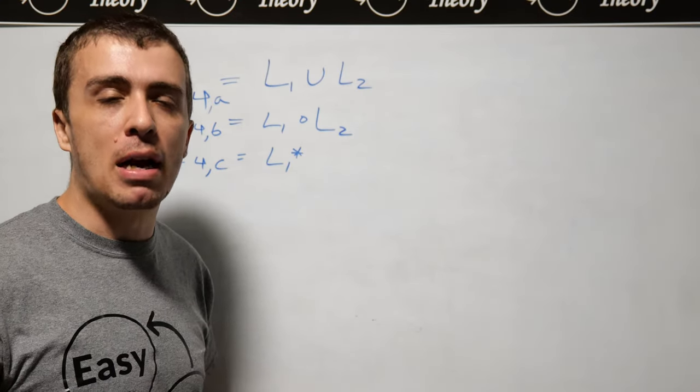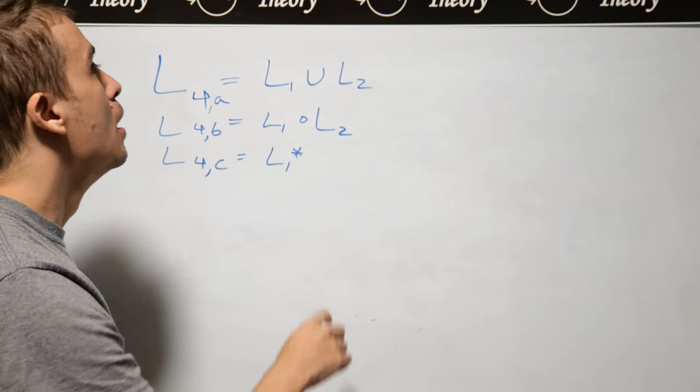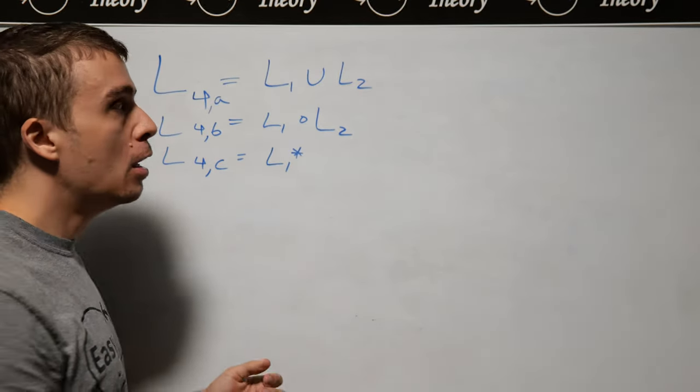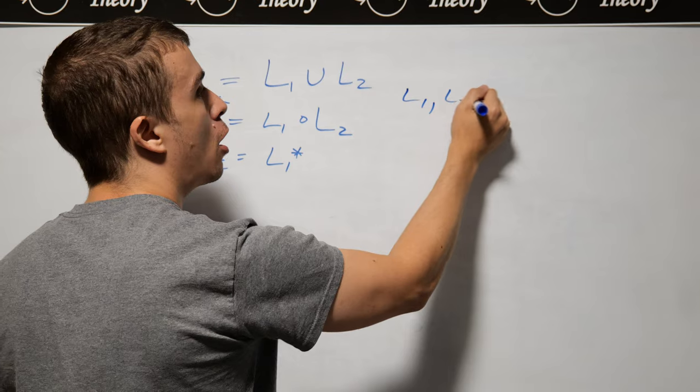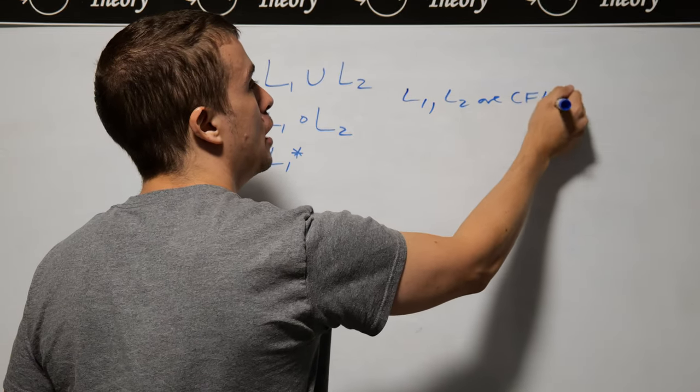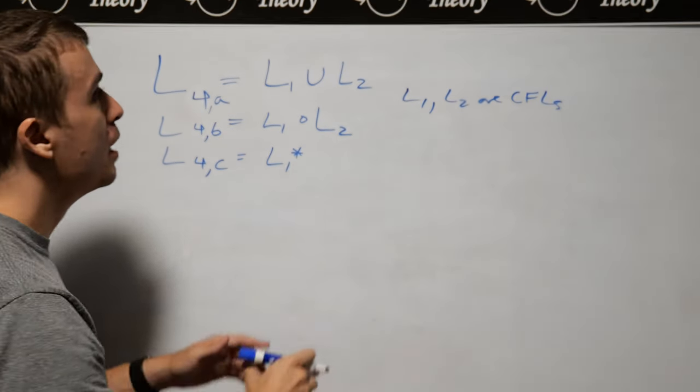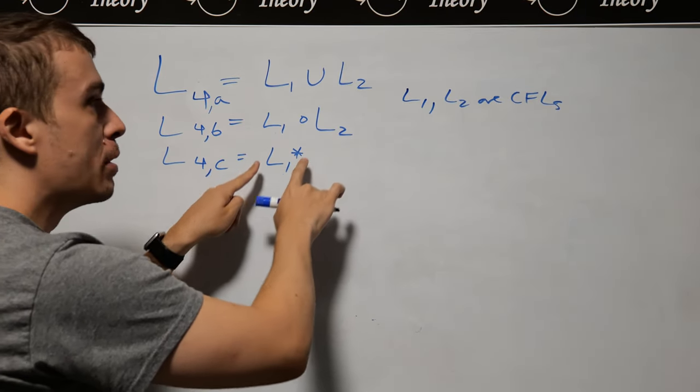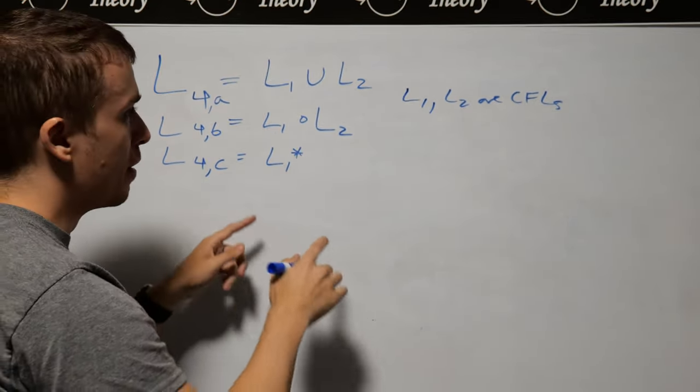So let's make a context-free grammar, actually three in this case, corresponding to two different languages, L1 and L2, where these two languages are context-free languages. So I have two context-free languages, and I want to form the union between them, as well as the concatenation between them, and then the star of either one. I'll pick L1 here.